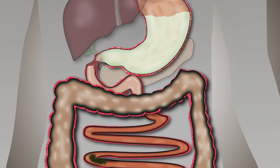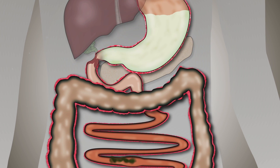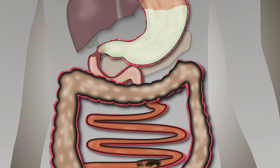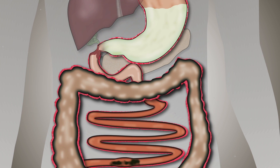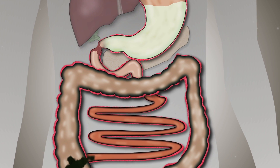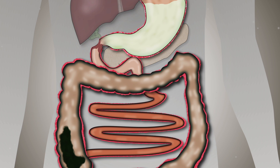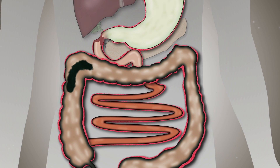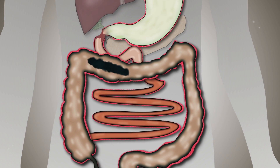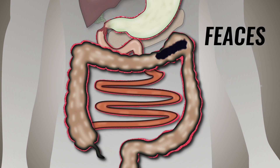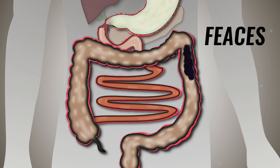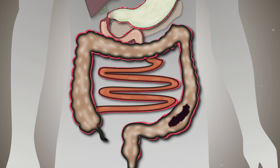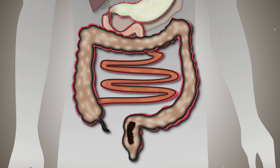In the small intestine, special cells known as enterocytes assist in the digestion and absorption of food, along with immune defense. From here, food is passed onto the large intestine where the absorption of food and water is completed and faeces are formed. Faeces are passed into the colon where they are excreted from the body.